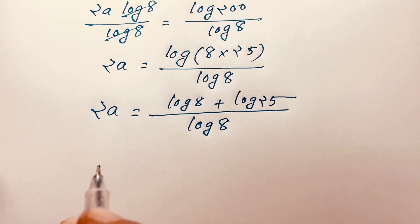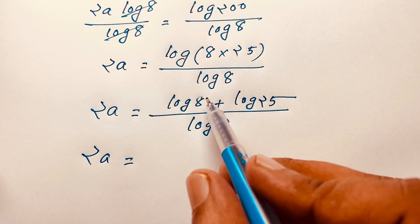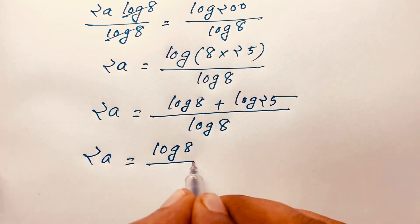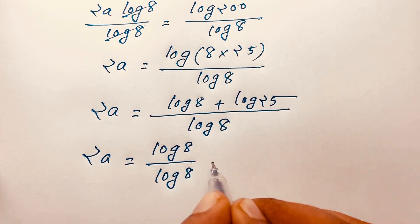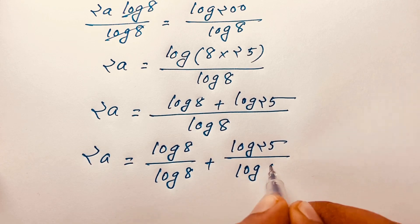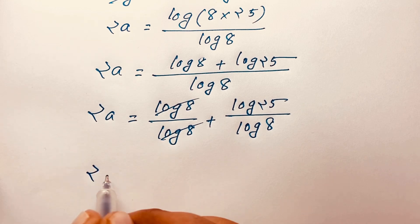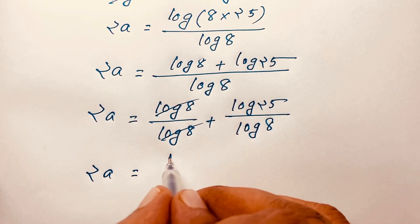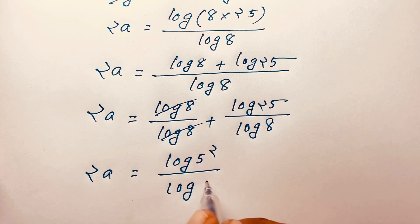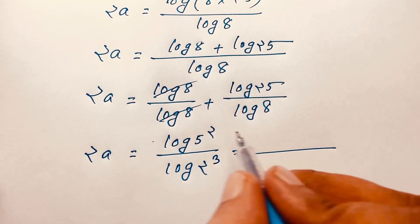So 2a equals (log8 + log25) / log8. Separating the fraction gives log8/log8 plus log25/log8. Log8/log8 cancels to 1, so 2a equals 1 + log25/log8. Writing log25 as log(5²) and log8 as log(2³), this becomes 1 + 2log5 / 3log2.